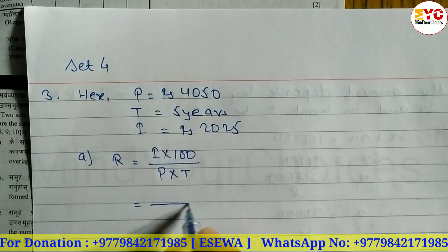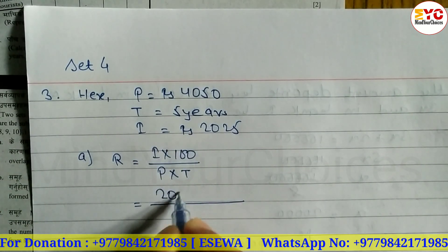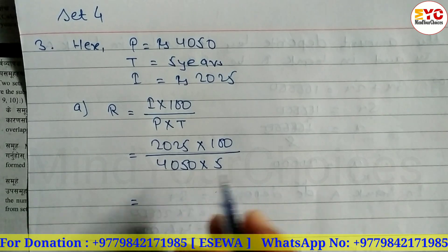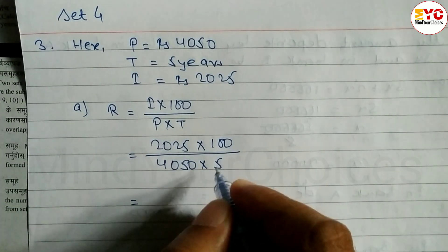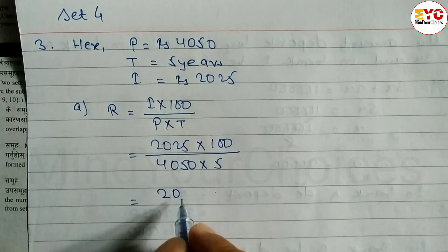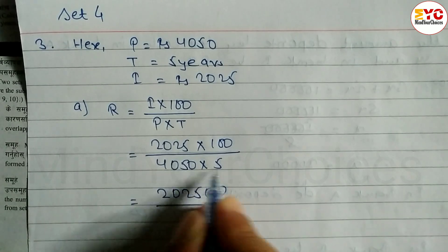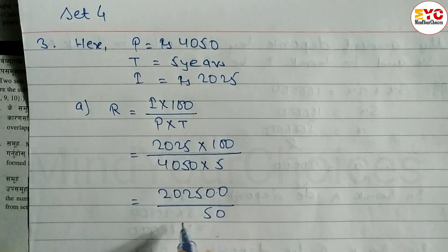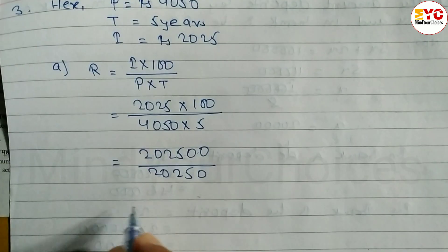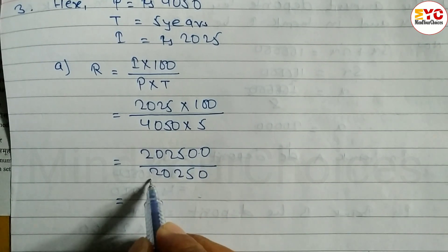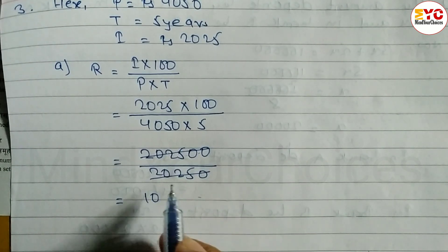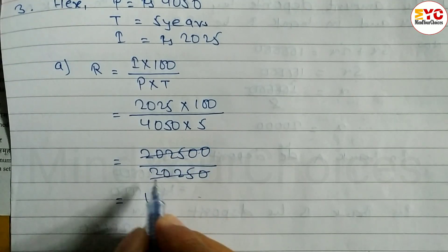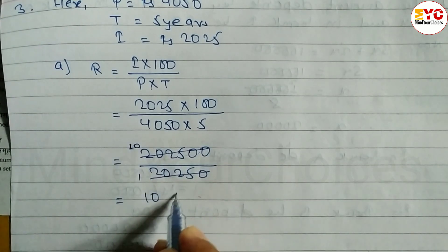So r is equal to - what is the formula of rate of interest? I into 100 divided by P into T. The value of I is equal to 2025 into 100, divided by P - P ka value 4050 - into time, 5 years. Calculate and cancel it: 202500 divided by 20250 equals 10%. So rate of interest is 10%.